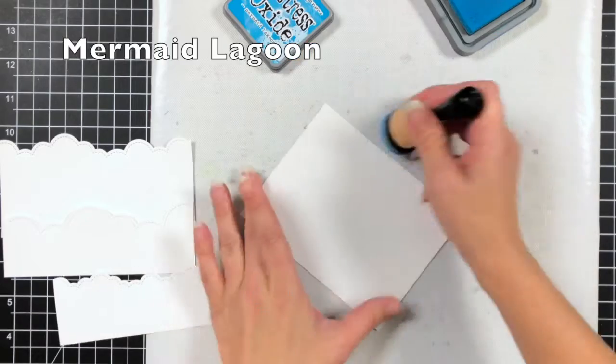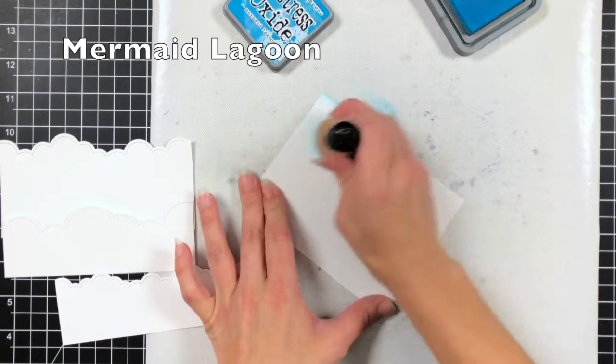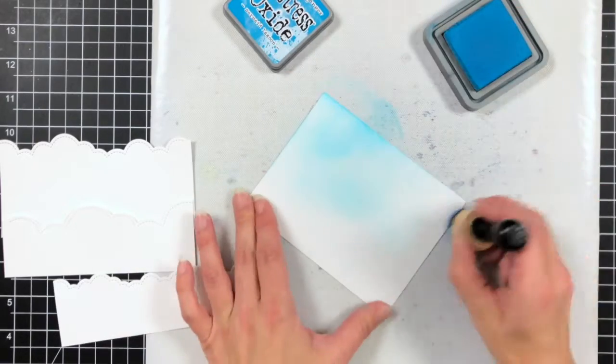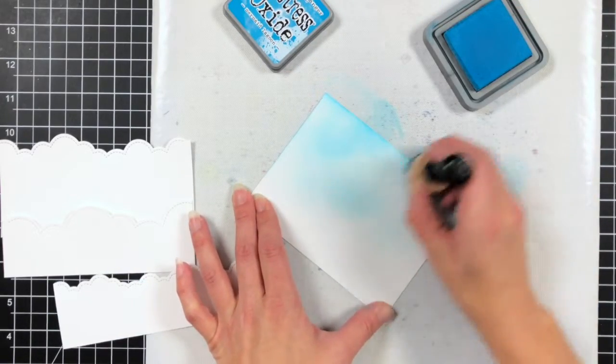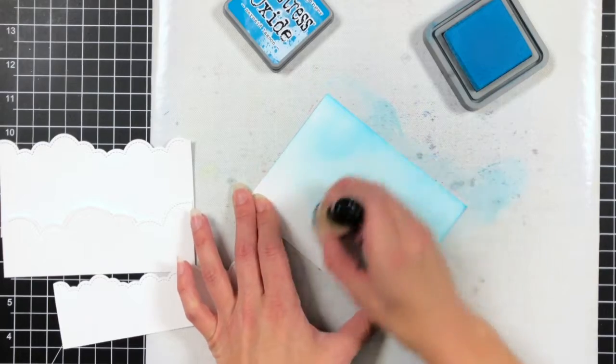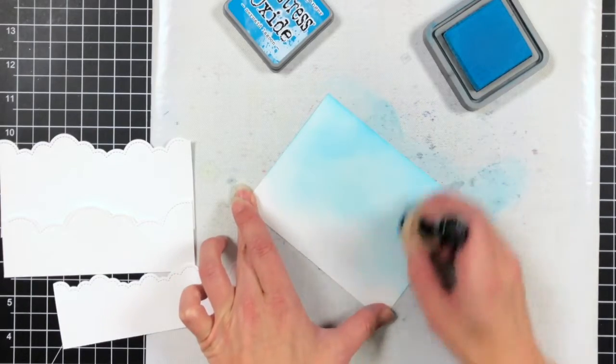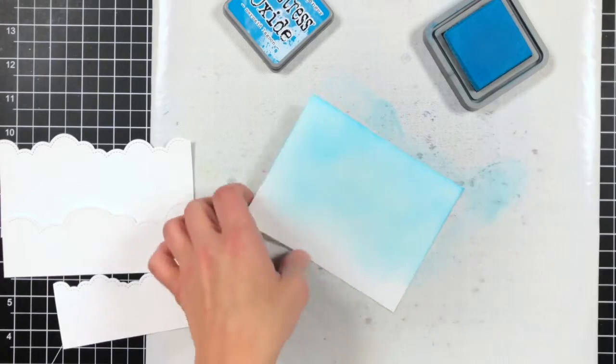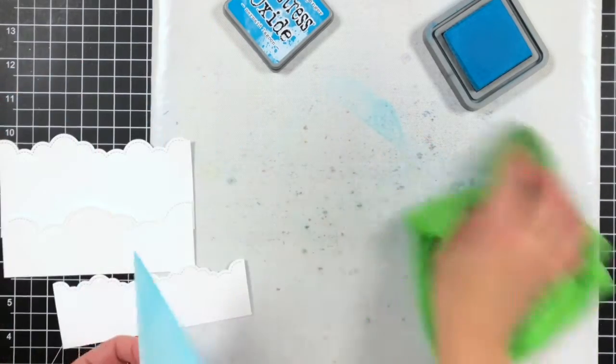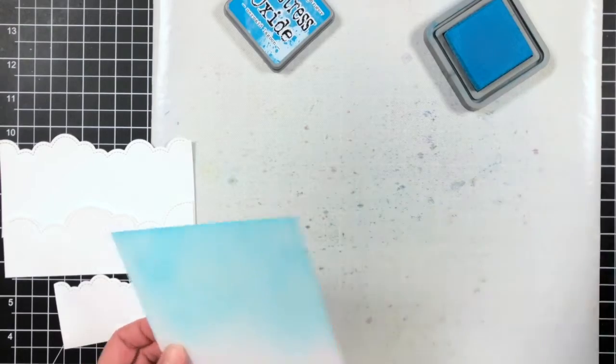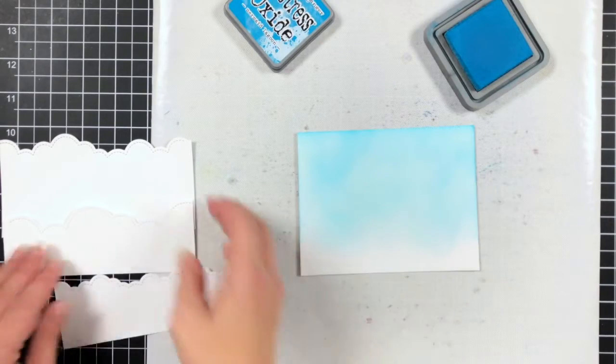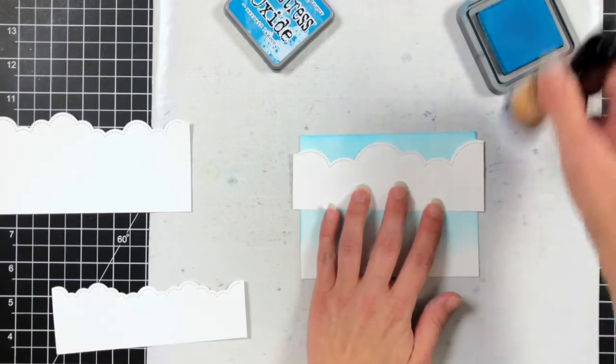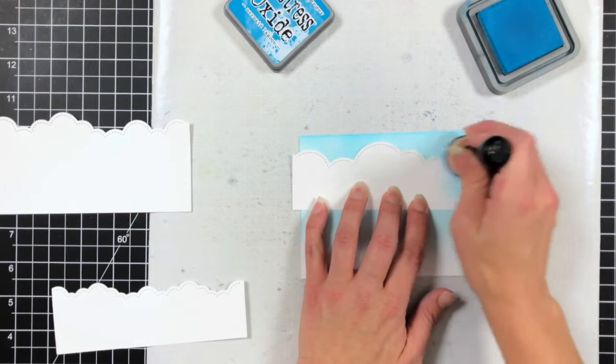So here I'm also taking another piece of Bristol smooth cardstock. This is just my favorite cardstock for ink blending. I think the distress oxides go on really well with it. The first thing I'm doing is bringing in a light layer of mermaid lagoon. Now you can kind of see it's splotchy and I'm not worried about blending that out. I want it splotchy because whenever you're looking up at the sky when it's a cloudy day the sky isn't always crisp blue.